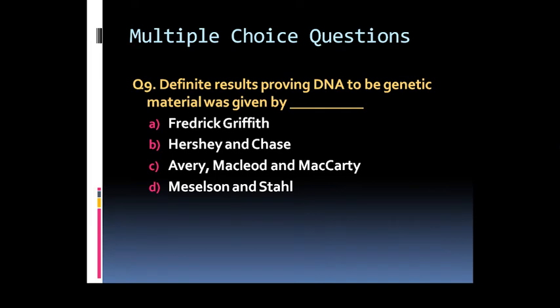Option B: RNA as genetic material. Option C: Protein as genetic material. Or Option D: Transforming principle. Question 9: Definite results proving DNA to be genetic material was given by: Option A: Frederick Griffith. Option B: Hershey and Chase.